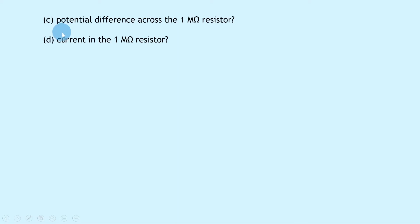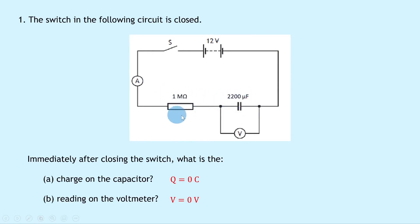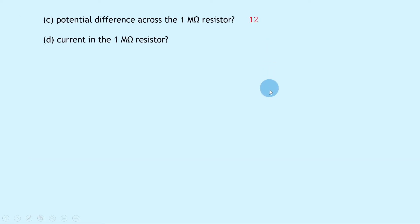Part C says immediately after closing the switch, what is the potential difference across the 1 megaohm resistor? Well, these things are in series, so we've got a potential divider circuit. If the potential difference across the capacitor is 0 to begin with, then the resistor must have all of the potential difference from the battery, so this is 12 volts across the 1 megaohm resistor.